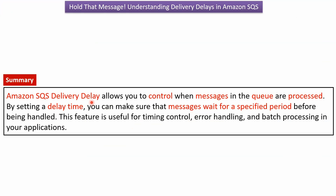Amazon SQS delivery delay allows you to control when messages in the queue are processed. By setting a delay time, you can make sure that messages wait for a specified period before being handled. This feature is useful for timing control, error handling, and batch processing in your application.